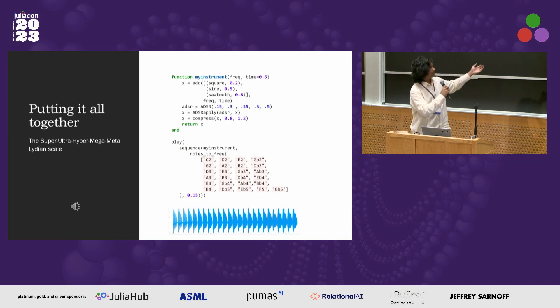And then here you can see a quick implementation of this. So we create an instrument with ADSR values and its oscillators and its compression. So this essentially creates a timbre that will then make sound, and then playing a sequence of notes, which is the super ultra hyper mega meta Lydian scale. That's the technical name, by the way. It's not a joke.